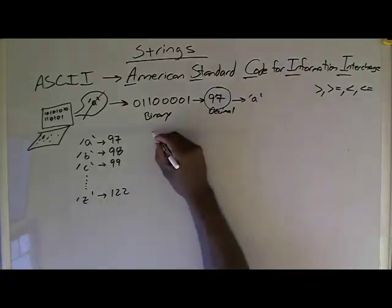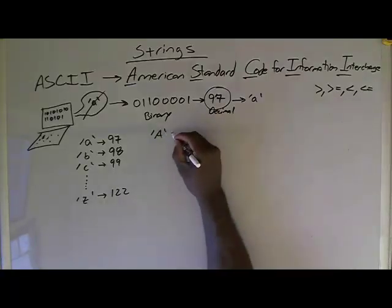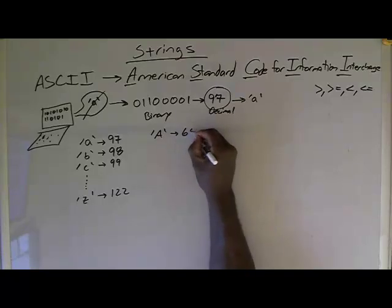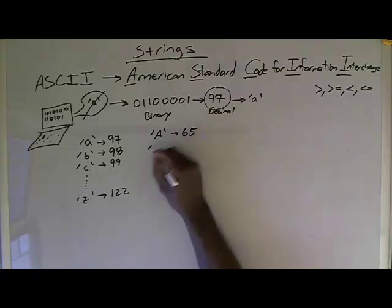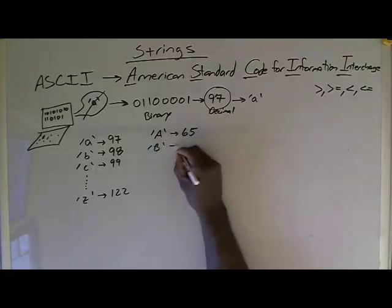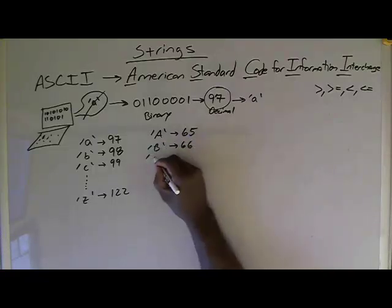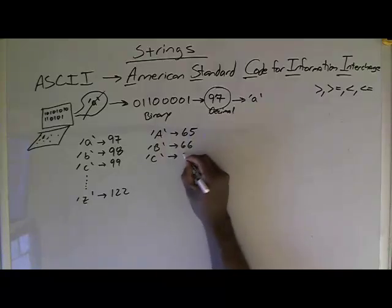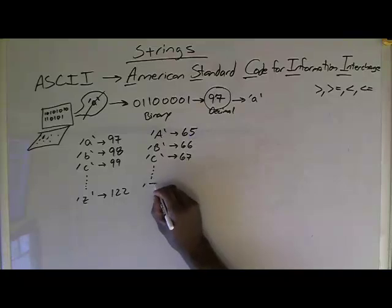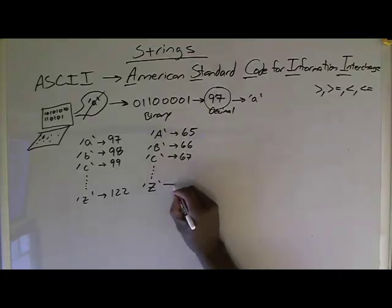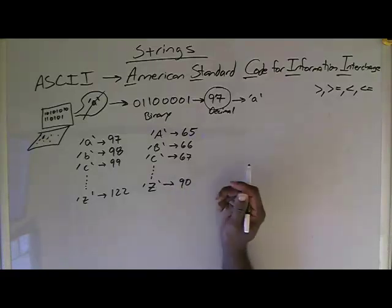If you look at uppercase A, it actually starts at ASCII code 65. And ASCII B is 66, and ASCII uppercase C is 67, all the way down to uppercase Z, which is ASCII code 90.